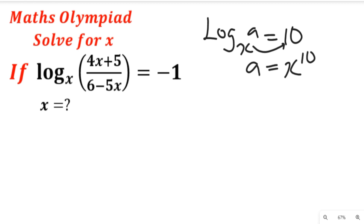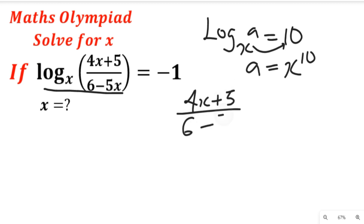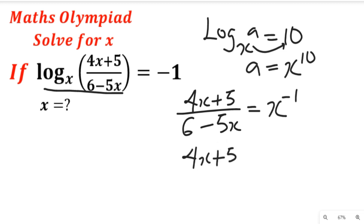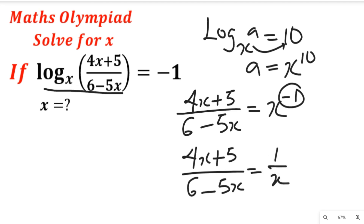So using this law we are going to simplify this equation and make that equation to become: (4x + 5) divided by (6 minus 5x) is equal to x to the power of minus 1. This having the power of minus 1 will become 1 divided by x.